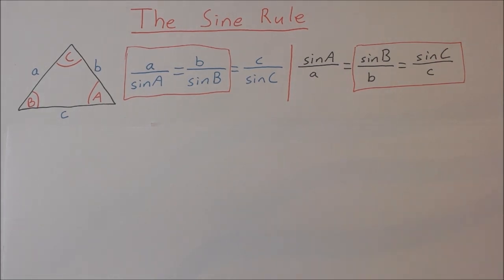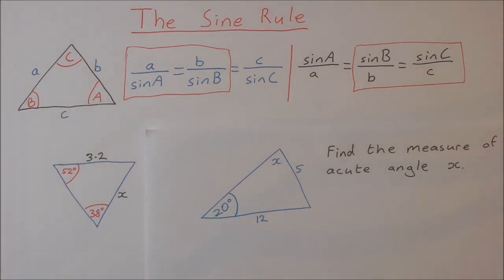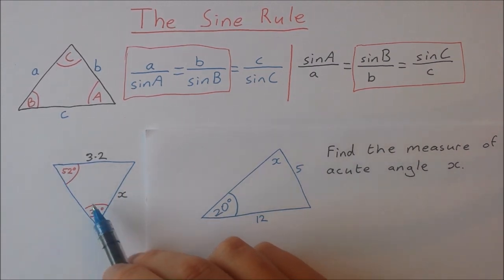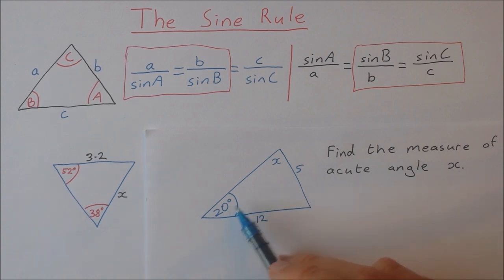So the two examples I'm going to show you today. First one is finding an unknown side when we're given two angles and one side. Second is finding an unknown angle when we're given two sides and an angle.